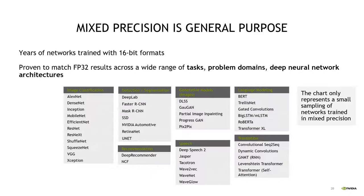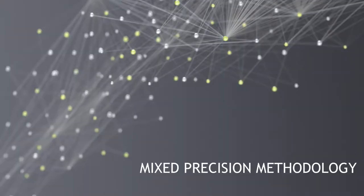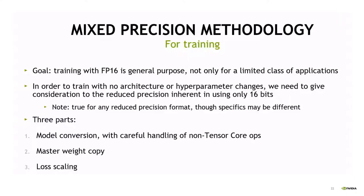TF32 format on Ampere architecture doesn't require any additional algorithms or code changes to use it. Now let's talk about the technical details of automatic mixed precision AMP and the algorithms and methodology behind AMP training that helps us use FP16 without losing accuracy. The goal is training with FP16 in general purpose — not only for a limited class of applications but for all applications. FP16 has fewer bits, and there are two big parts to consider: first, model conversion and non-Tensor Cores operations; second, gradient computation and optimizer steps.